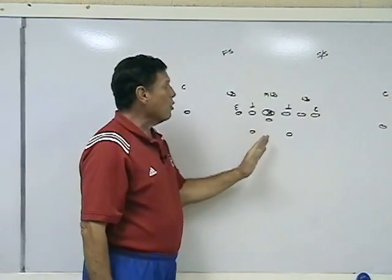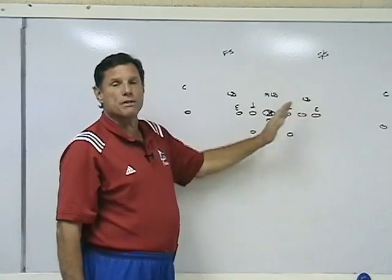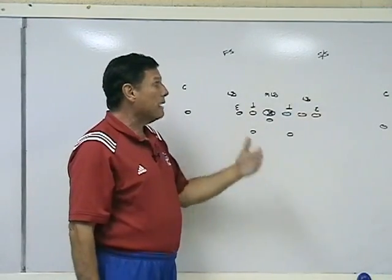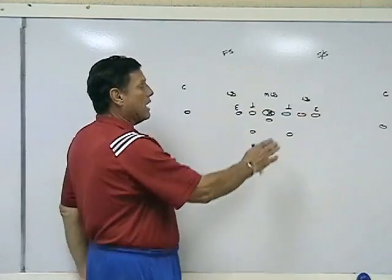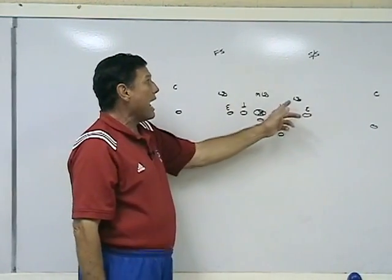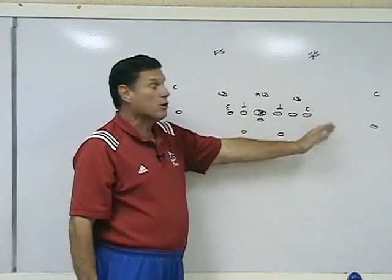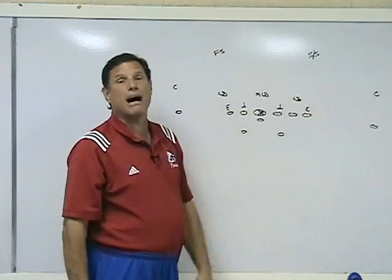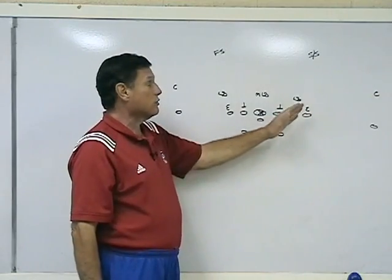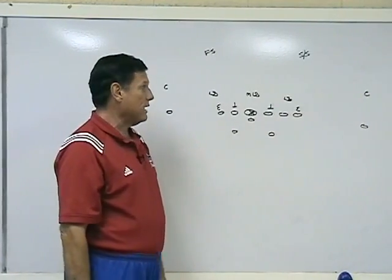The other thing we want to do is attack the off-tackle hole with something besides the outside veer. One of the plays we like to run is a power play where we run the ball off-tackle and make the blocking scheme look exactly like outside veer. If the linebacker is stepping outside to play the quarterback, we're able to run the ball with power off-tackle, and we've had a lot of success causing that defense problems with our power play off-tackle.